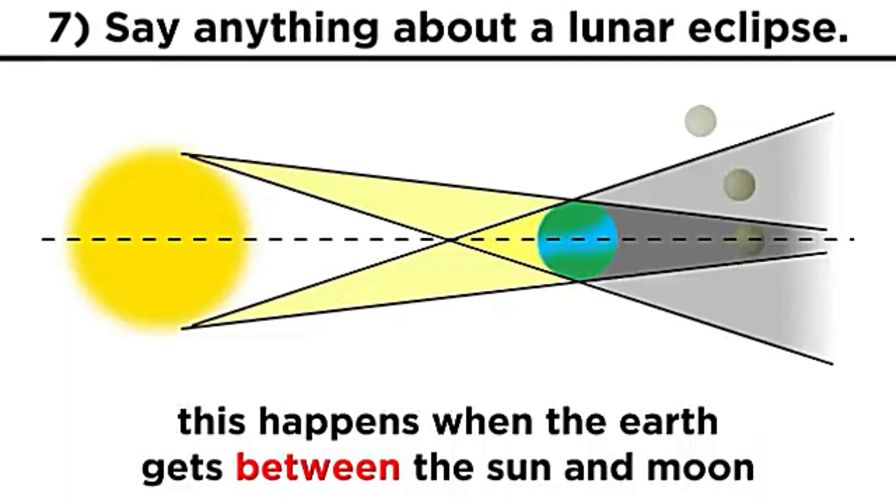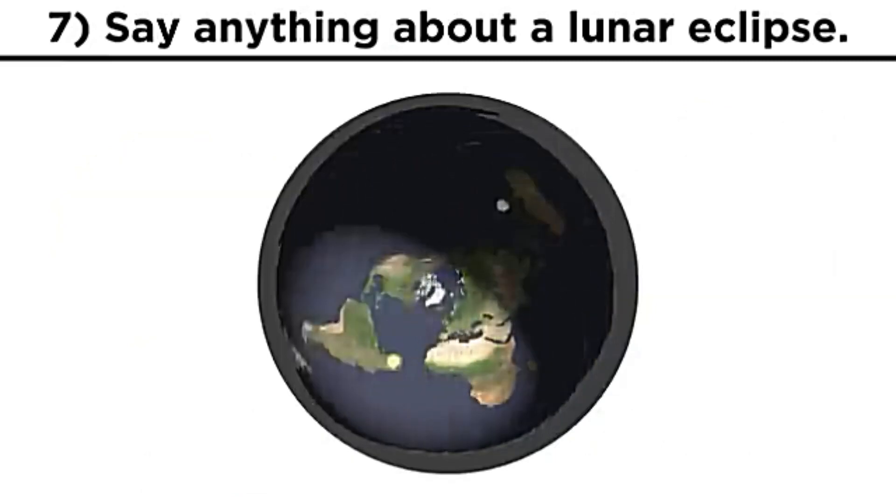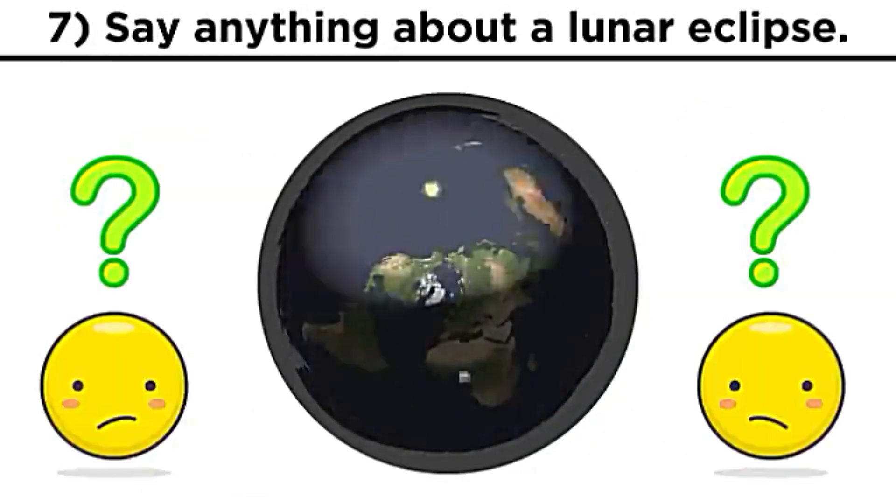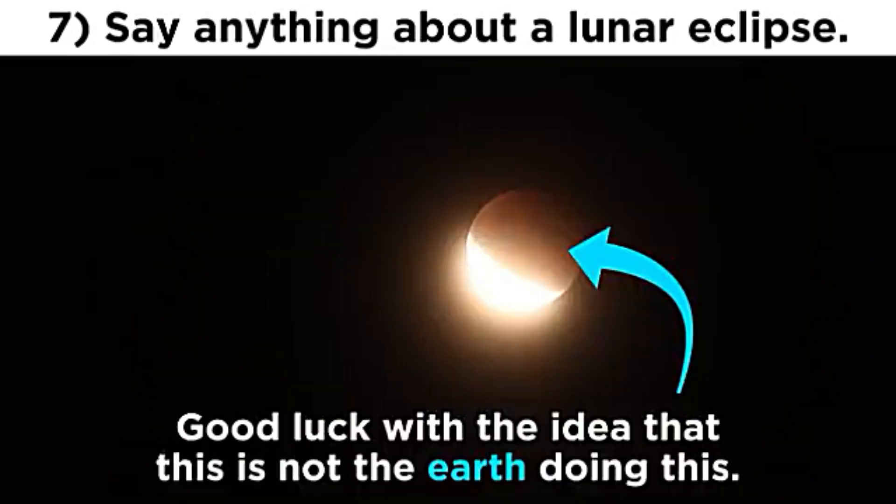A lunar eclipse happens when the earth gets between the sun and the moon. That's right, in between. These two objects are not perpetually above a flat plane and you know it, which is why you're totally silent on lunar eclipses. And if you're going to propose that some other object besides the earth is what obscures the moon, good luck trying to demonstrate its existence.